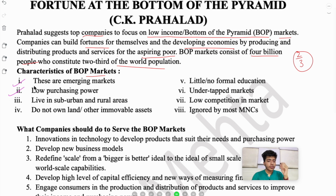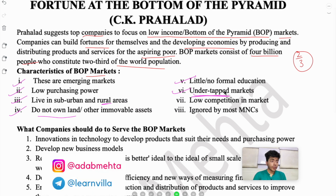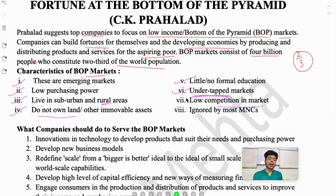BOP markets have low purchasing power — obviously, being the bottom of the pyramid, the low income group. They live in sub-urban and rural areas, do not own land or immovable assets, and have low levels of education. These are undertapped markets — big companies don't focus on them because they think high income groups will give more money and profit margin. So BOP markets remain undertapped with low competition, since only small local firms serve them.